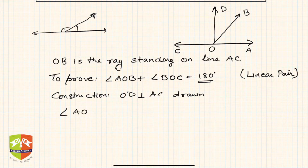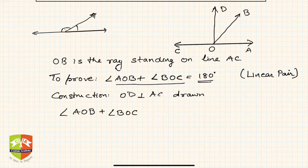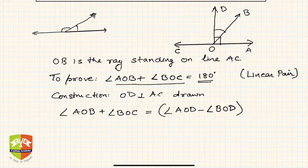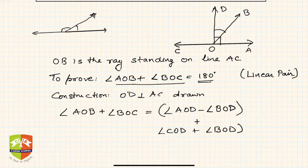Angle AOB plus angle BOC — this is what we have to prove — can be written as angle AOD minus angle BOD, where angle AOD is 90 degrees. So that gives us 90 degrees minus BOD, which equals angle AOB. Plus angle BOD can be written as angle COD plus angle BOD. So the entire expression becomes 90 plus this angle.